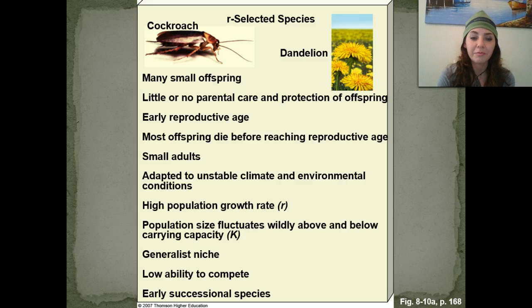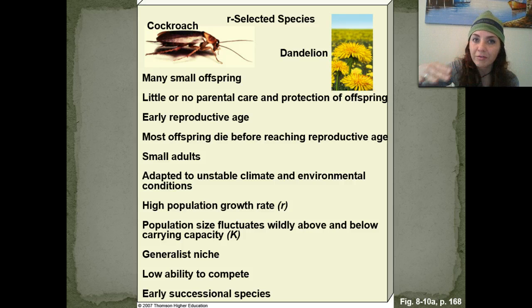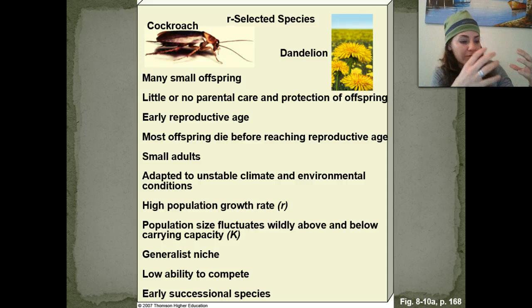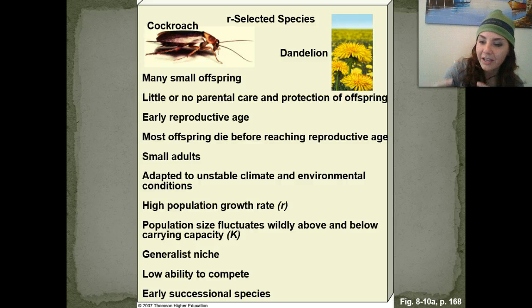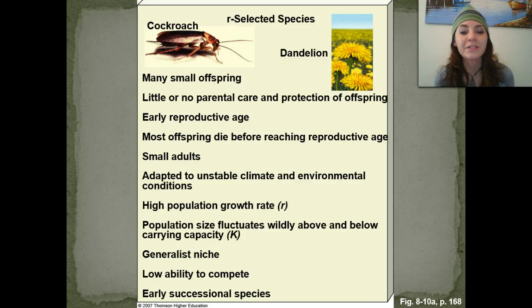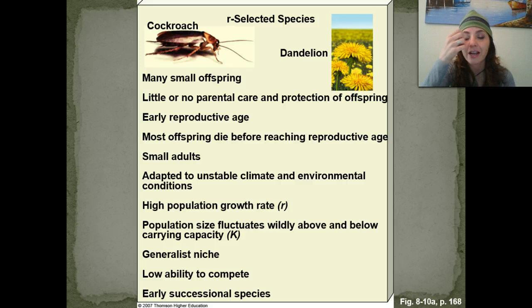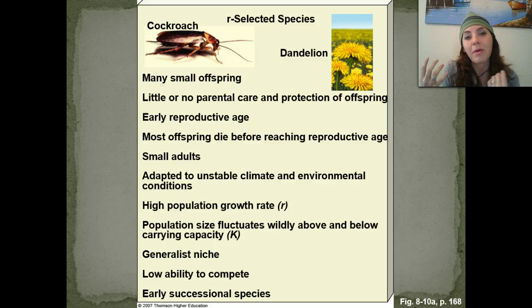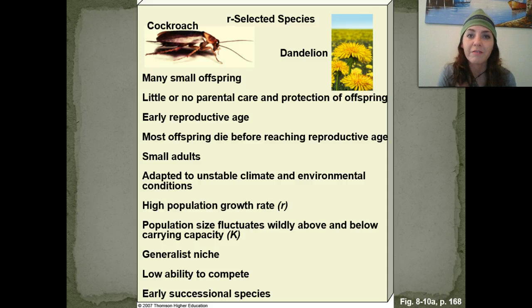R-selected species have a very low ability to compete and are early successional species. They're among the first colonizers during succession — the progression from bare soil to small plants, shrubs, and eventually trees. Early successional pioneer species need to grow very quickly in order for that environment to begin increasing through the different successional stages.